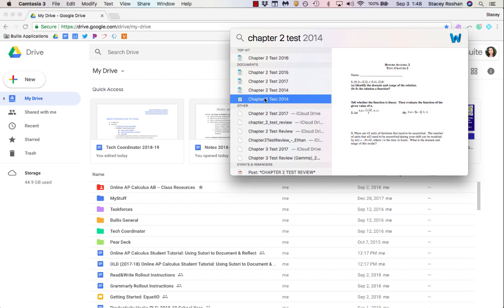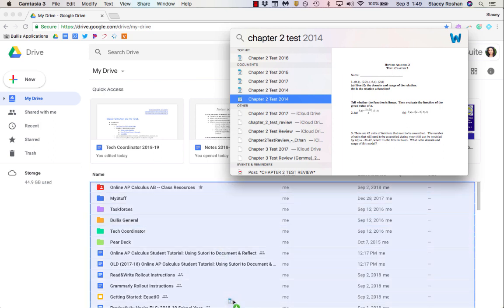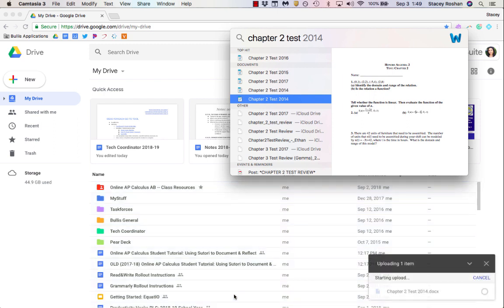and easily convert it into a Google Doc using EquatIO to make the math equations editable so you can revise it. Of course you don't want to give the same exact test from year to year. It's easier to start with something as a base and then edit and refine from it.